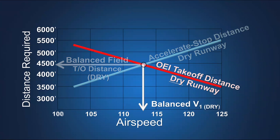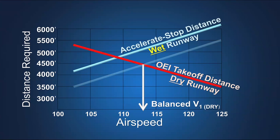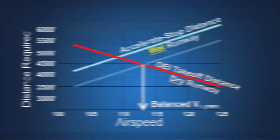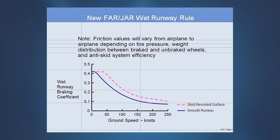When the runway is wet, the accelerate stop distance increases due to reduced friction during braking. The braking friction on a wet runway varies greatly with speed, while it is essentially constant with speed on a dry runway. At faster speeds, the wet runway braking friction is much lower than at slower speeds.